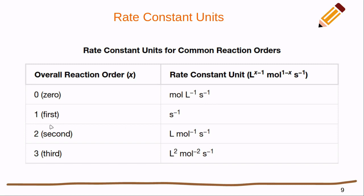If it was first order, it's going to be per second. If it's second order, it's going to be one over molarity per second, so per molarity per second or liters divided by moles divided by seconds.